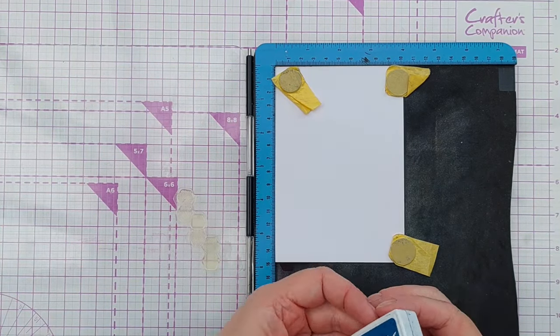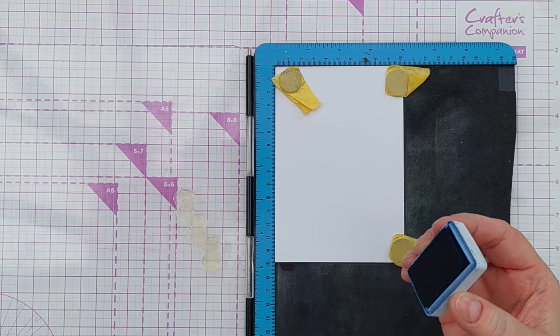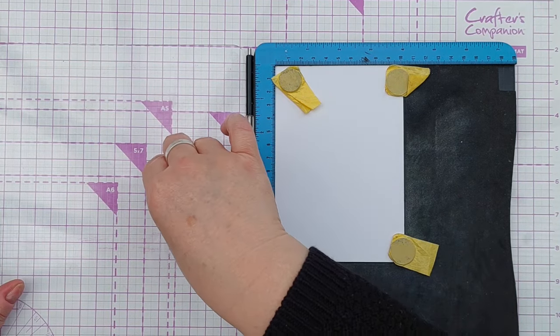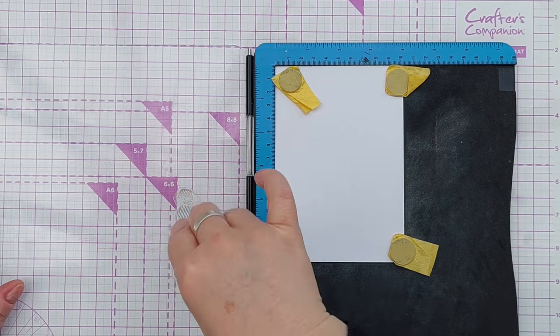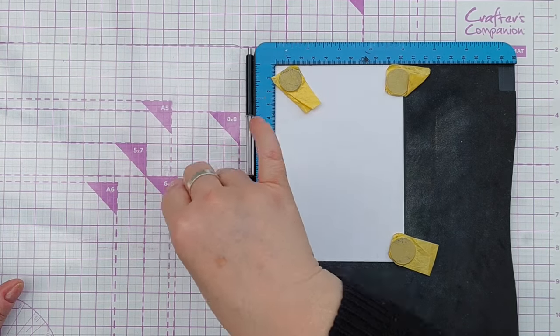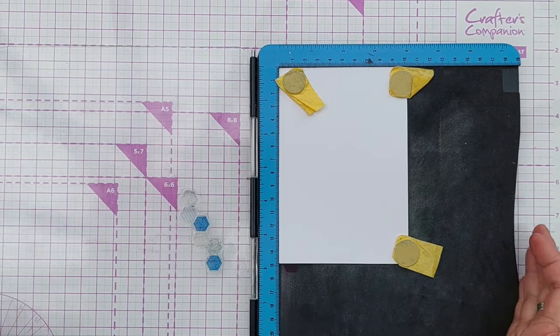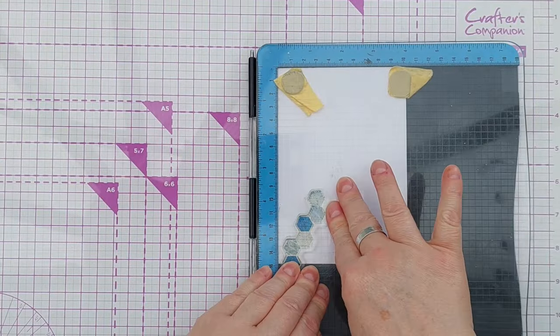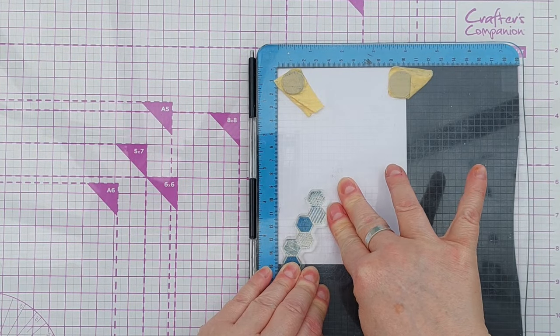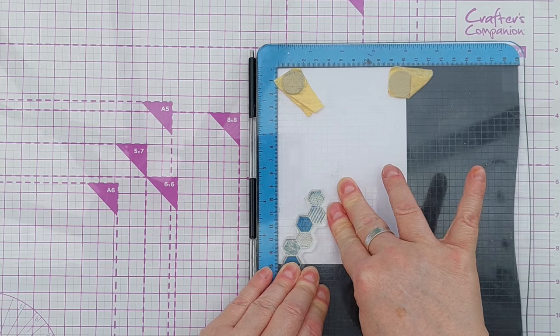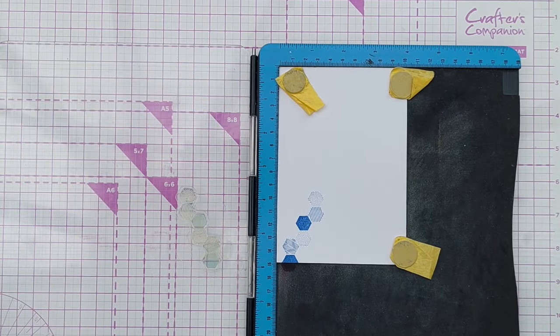And I think we'll start with the Cobalt and we'll do that one as the middle row of colour. Get a nice coating on that, flip it over, press it down and just hold it for a couple of seconds to let the ink transfer. That's come out nicely.